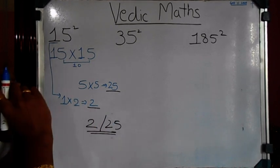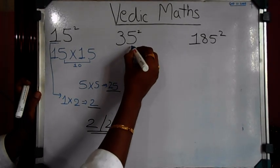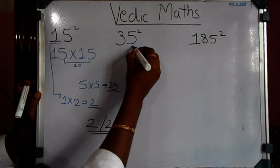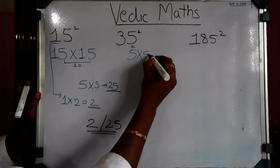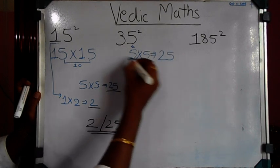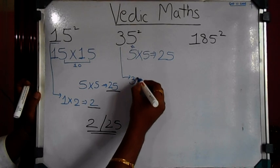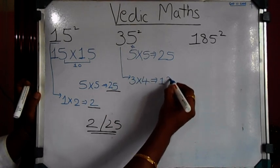The same way, let's solve for 35. Since 35 also ends with 5, take 5 into 5 to get 25, and 3 is multiplied with 4, the number ahead. Therefore, you will get 12 here.